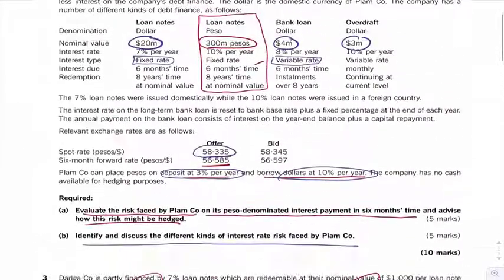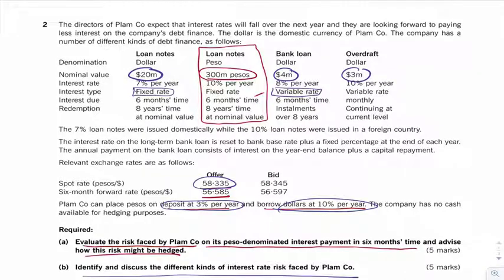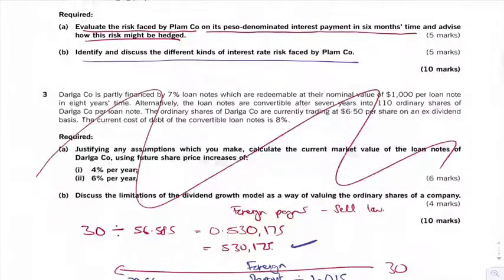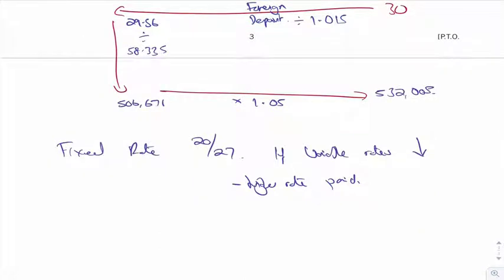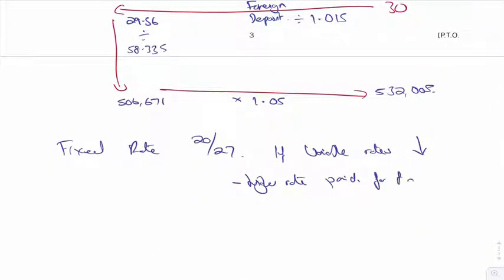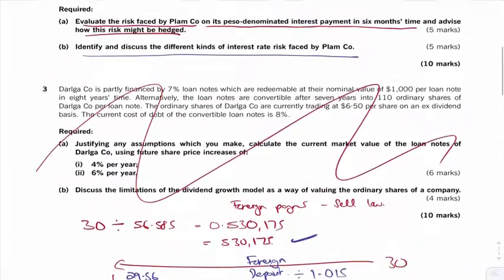And then you say right, well how long is it fixed for? Eight years. So they're still going to be paying a higher rate paid for eight years.